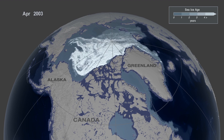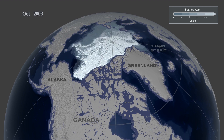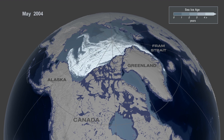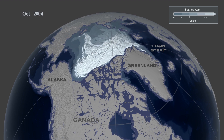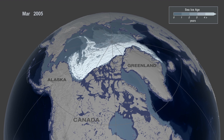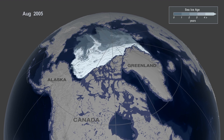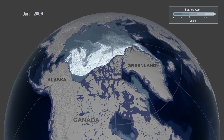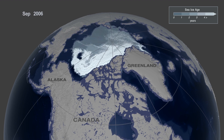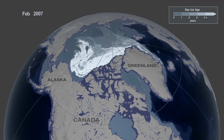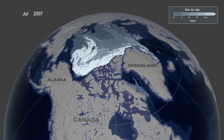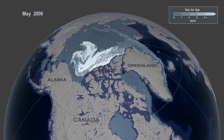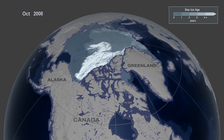Eventually, the ice will spin out of that gyre and go out through Fram Strait. In the past, we've always had enough ice growth and ice aging — enough ice surviving the summers to replenish the older ice that's lost. But in recent years, we've seen less replenishment. There's been more melt during the summer, so the ice that goes out through Fram Strait has not been compensated by the ice growth.